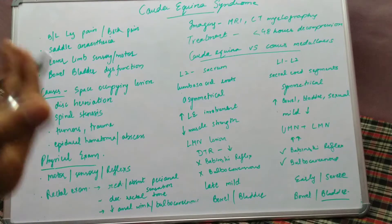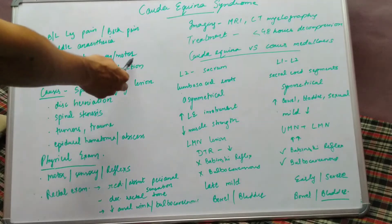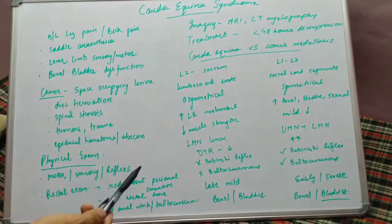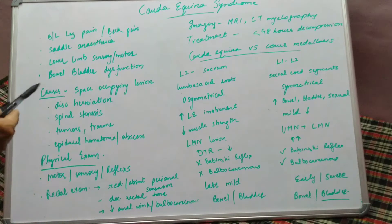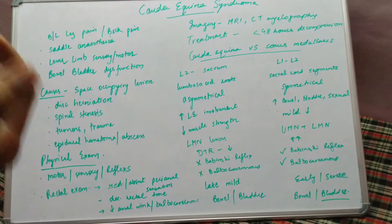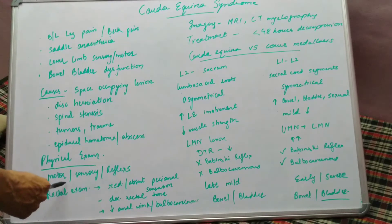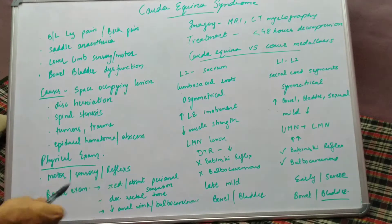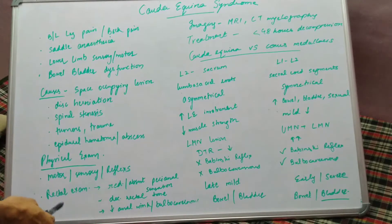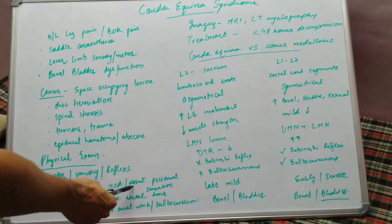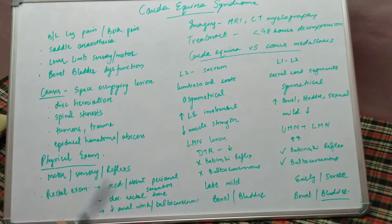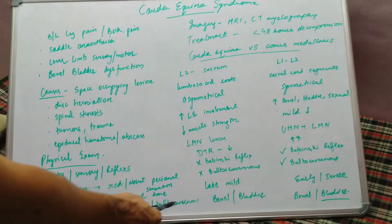On physical examination, if the patient is presenting late, there might be atrophy due to lower limb motor weakness. On palpation, there might be tenderness over the involved area. Importantly, motor, sensory, and reflex changes will depend on which nerve fibers are involved. A rectal examination is also important — there will be reduced or absent perianal sensation, decreased rectal tone, and the anal wink and bulbocavernosus reflex will be either impaired or absent.